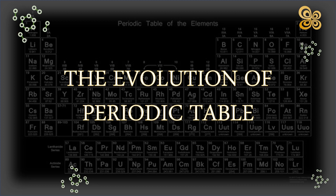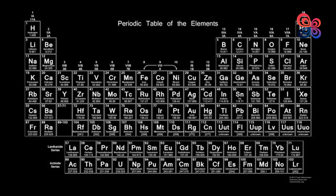The elements are listed in the periodic table according to their atomic structure and chemical makeup. When scientists first began to find new elements and notice patterns in their properties in the early 1800s, the periodic table began to take shape. Below is a summary of how the periodic table developed.